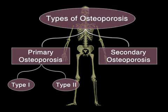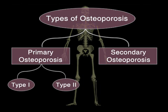There are two types of osteoporosis: primary and secondary osteoporosis. Primary osteoporosis is in turn divided into type 1 and type 2.